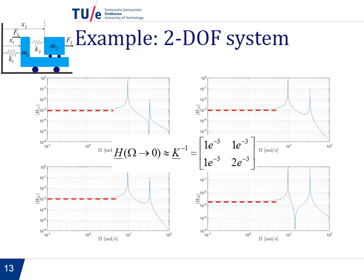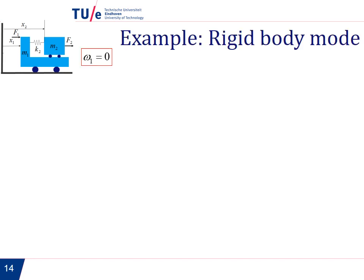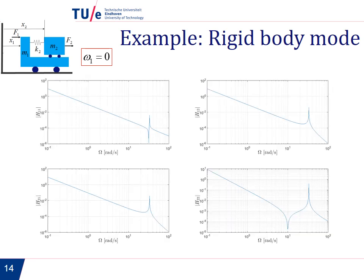But what happens now if we remove the spring here? So we have a system now with a rigid body mode. The first eigenfrequency of the system is zero. So how do you think these plots will look like? Like this. Obviously, we just said at the eigenfrequencies of the system, the response goes to infinity.